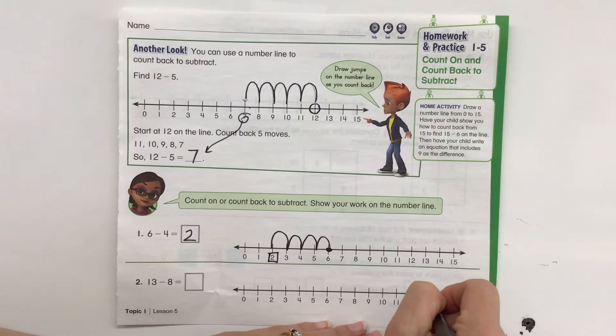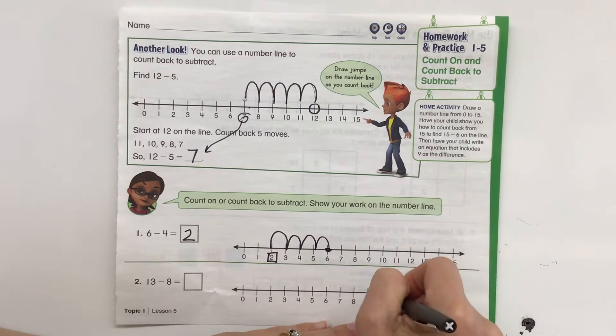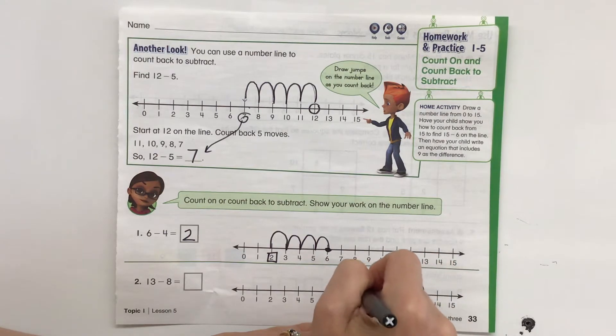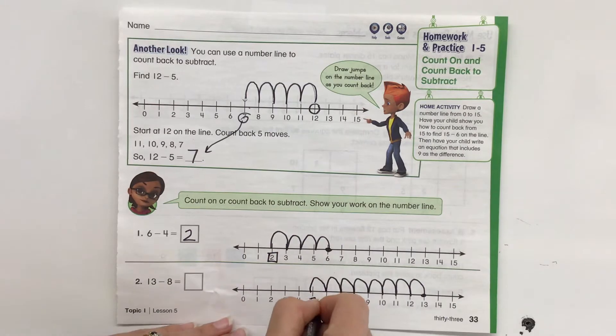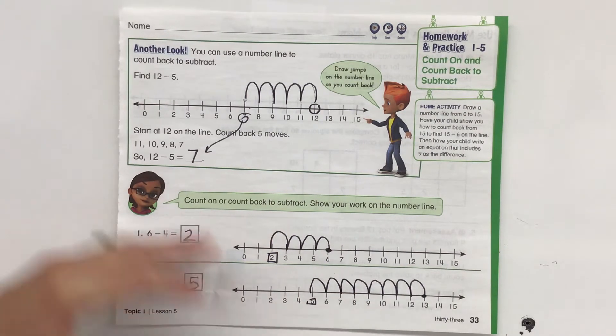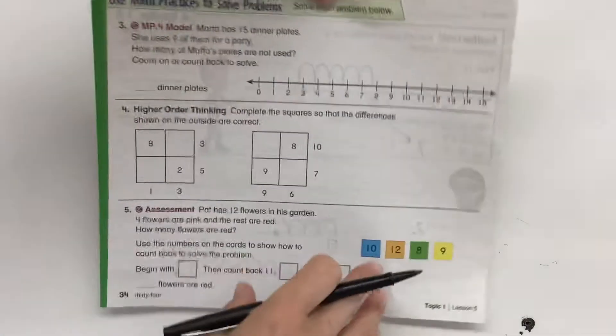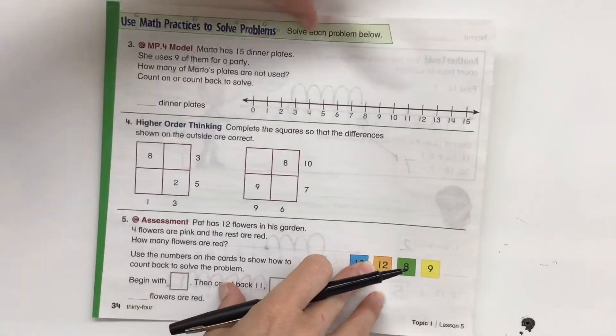I'm going to count backwards again on this one. 13 minus 8. 1, 2, 3, 4, 5, 6, 7, 8. Puts me at 5. So I know that 13 minus 8 has a difference of 5. All right, again, feel free to pause the video as needed as you go through.